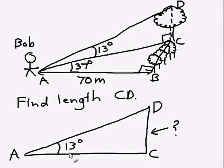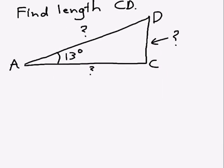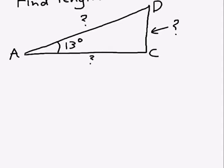We do know the angle of elevation is 13 degrees. We don't know the length of side AD yet. And we don't know the length of side AC. So we don't have enough information to find out the height of CD yet. What we can do is we can try and find out what length AC is. Because once we've got that, we'll be able to find length CD.